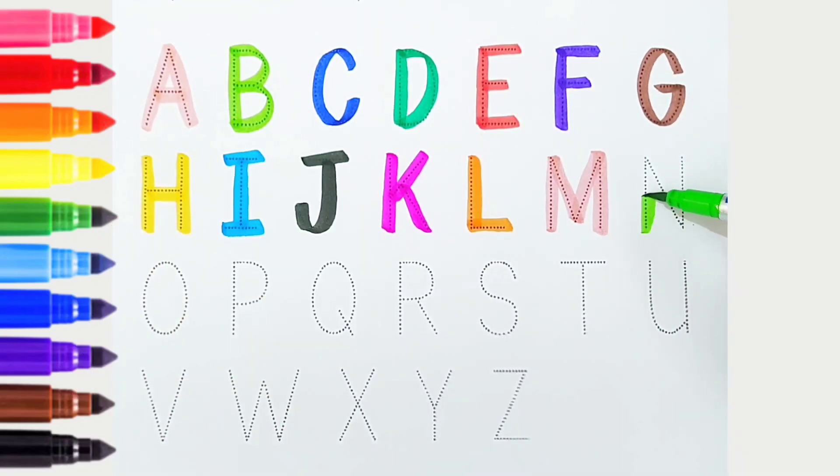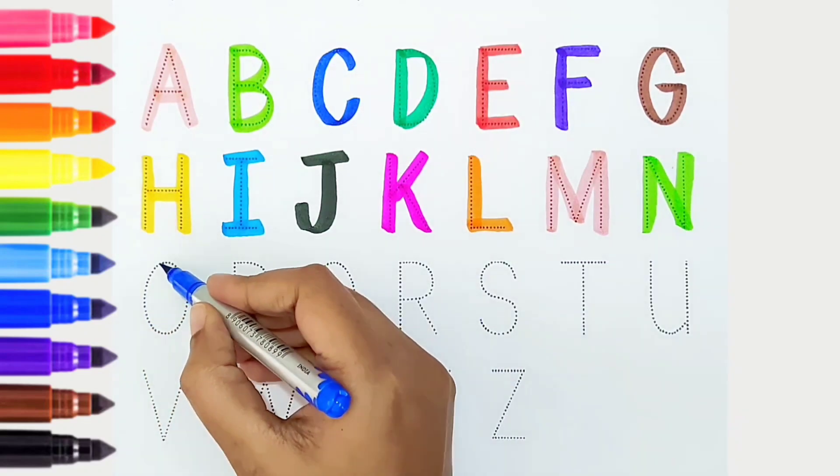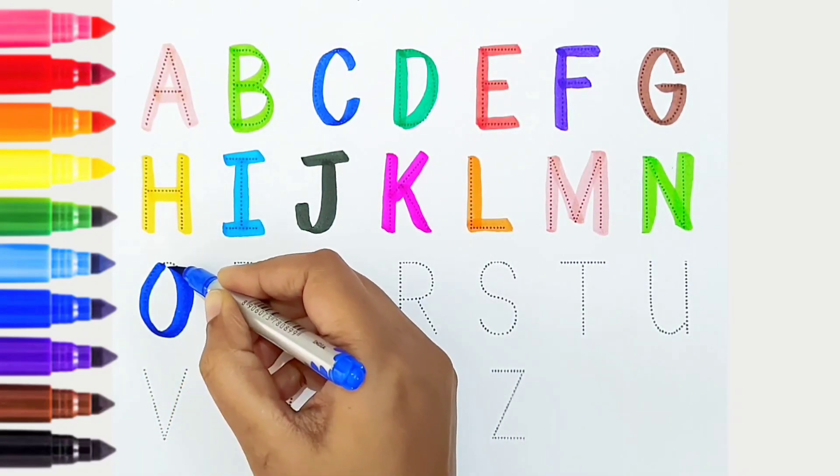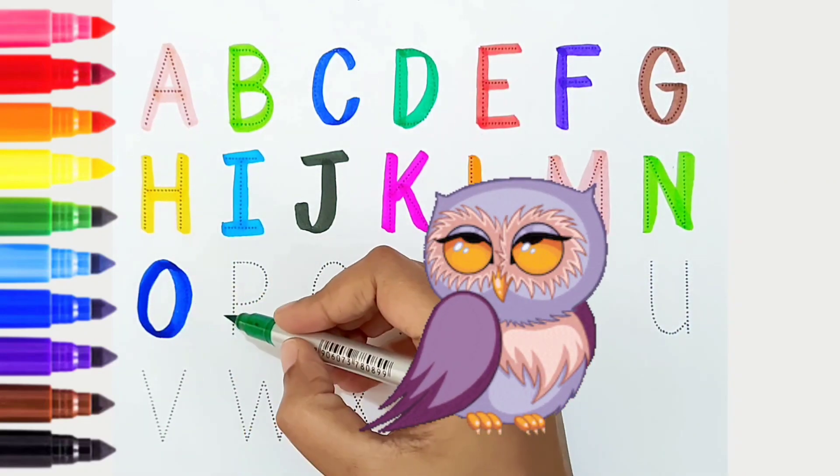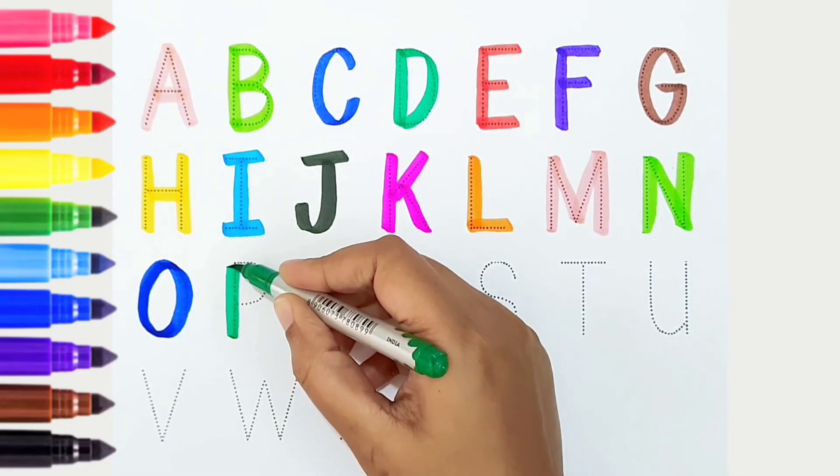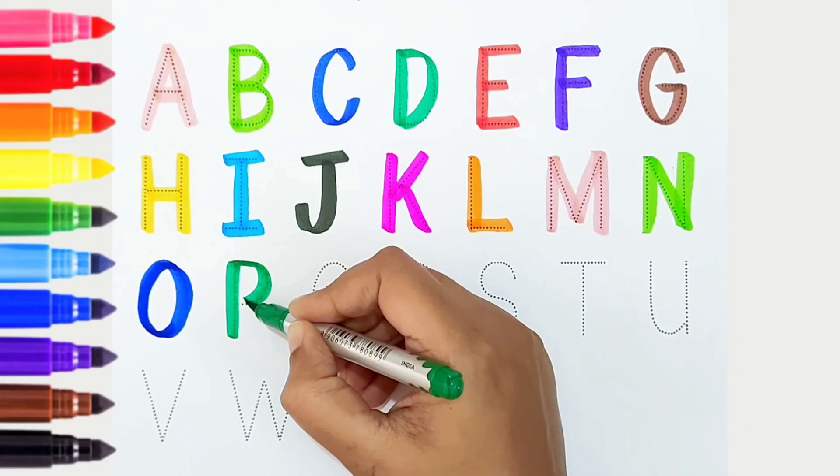N, light green color, is for nest. O, dark blue color, is for owl. P, dark green color, is for pen.